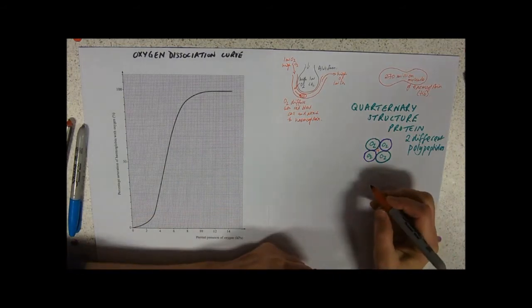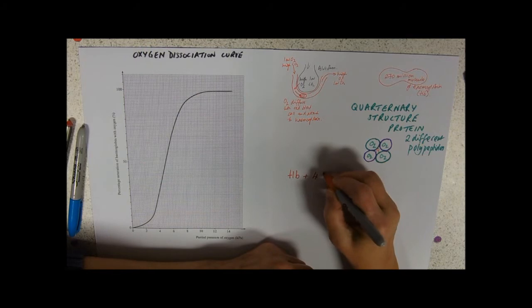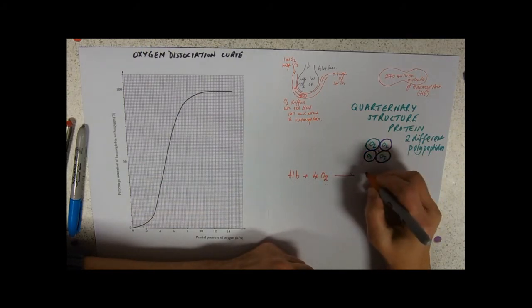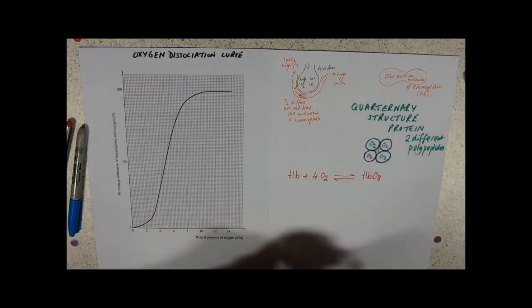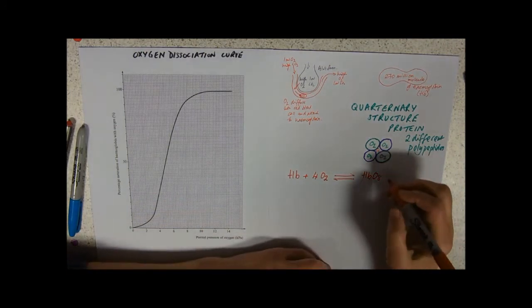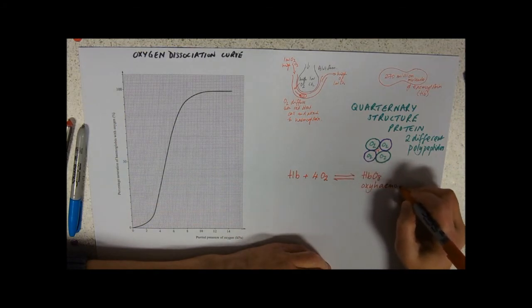So hemoglobin plus four oxygens makes HbO8. Obviously that oxygen needs to be given up to cells, so that's a reversible reaction and we call this oxyhemoglobin.